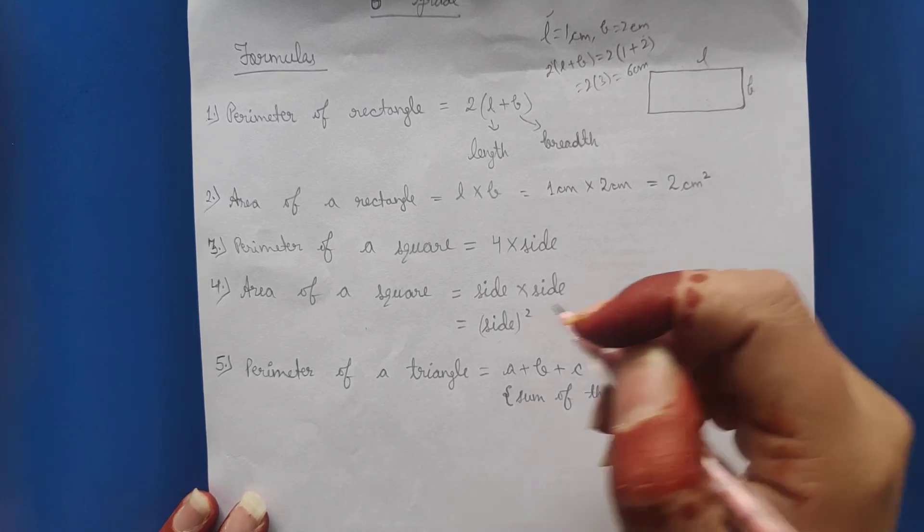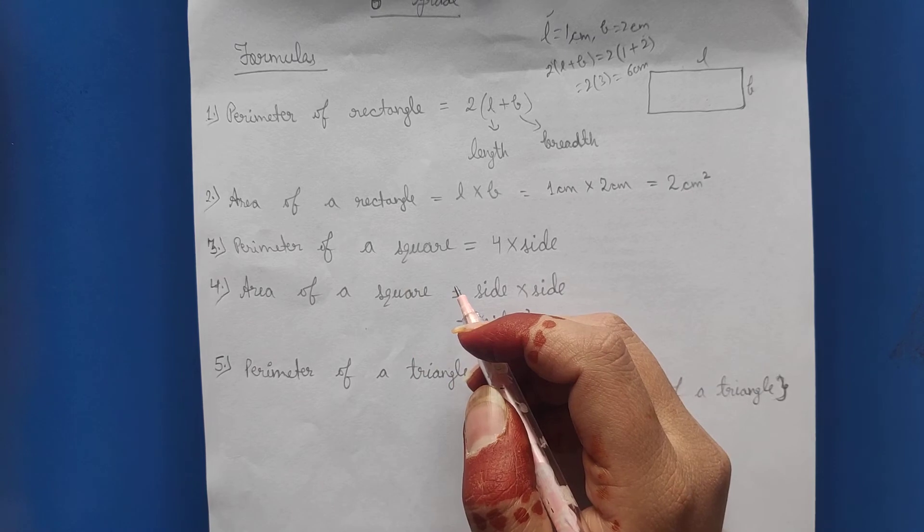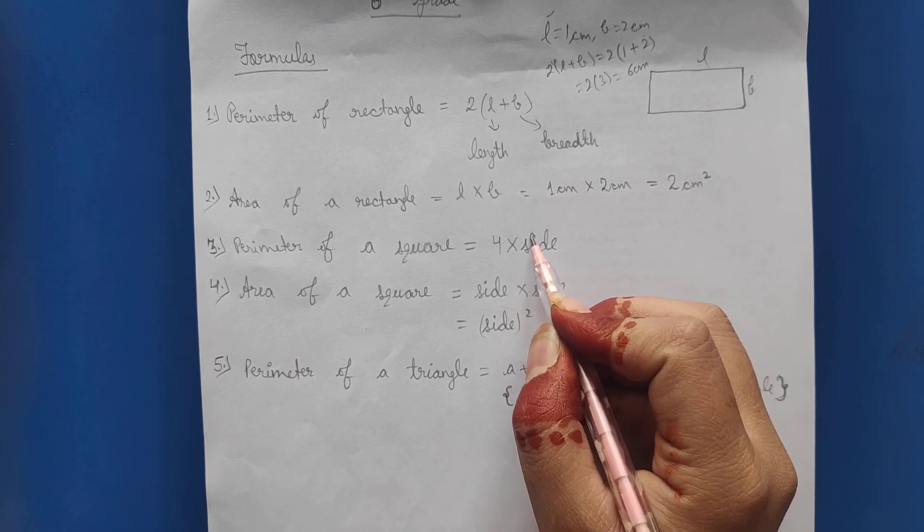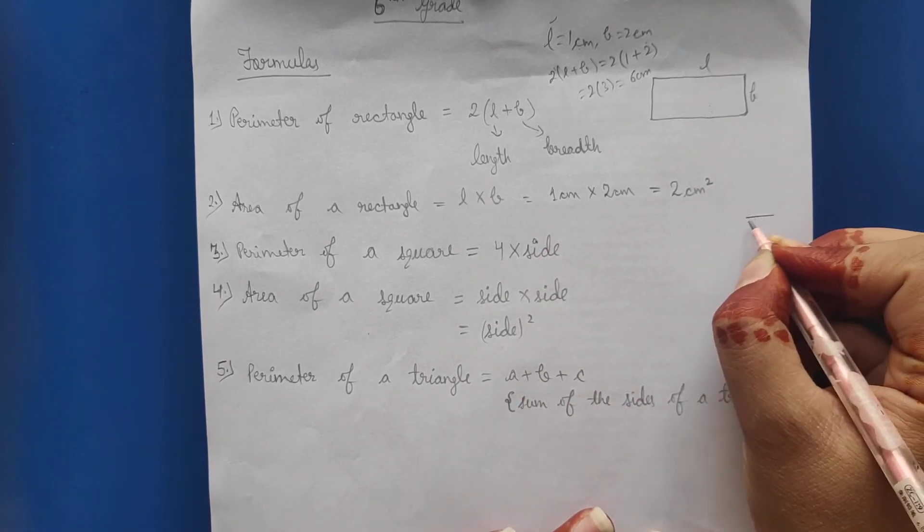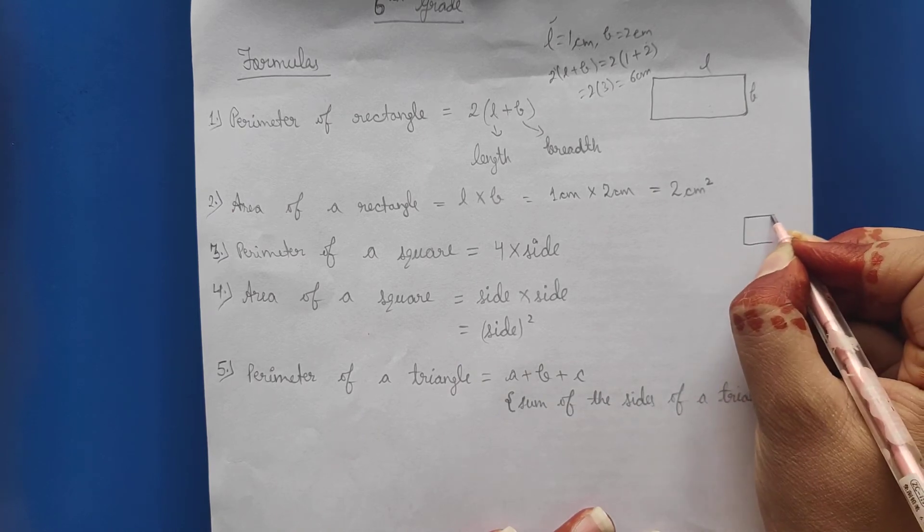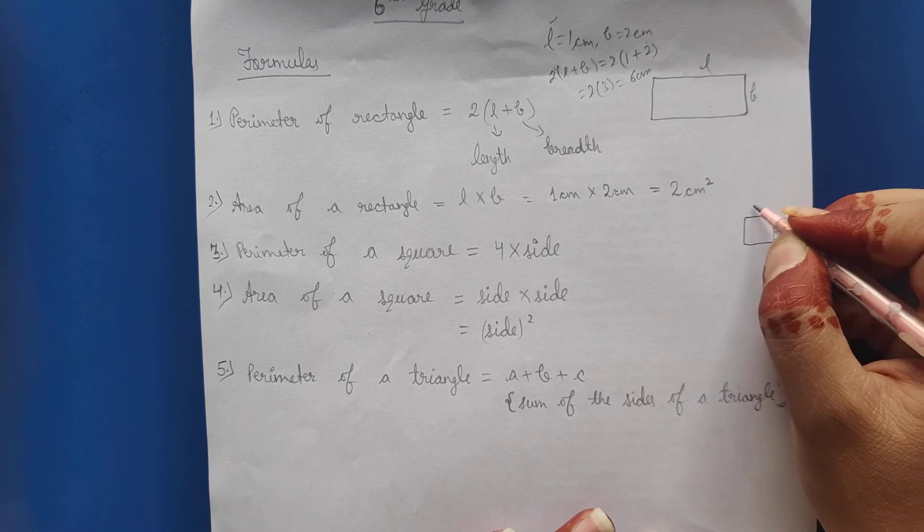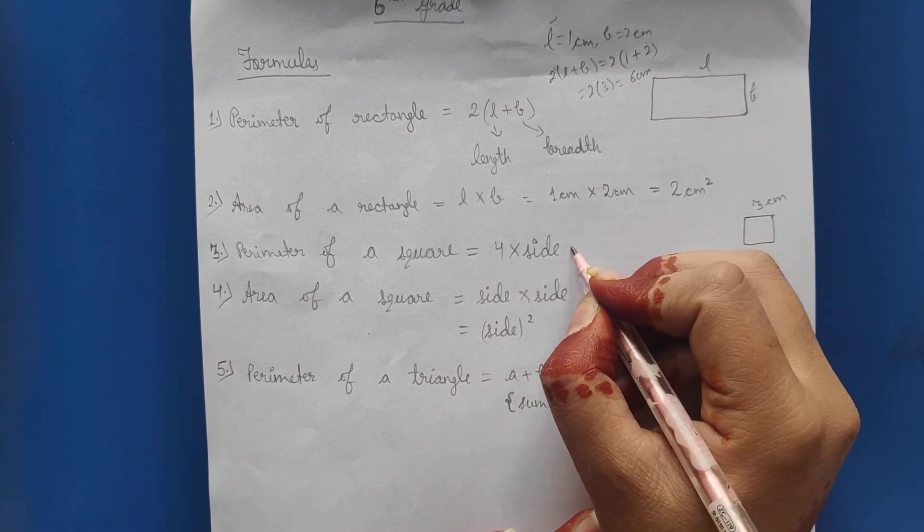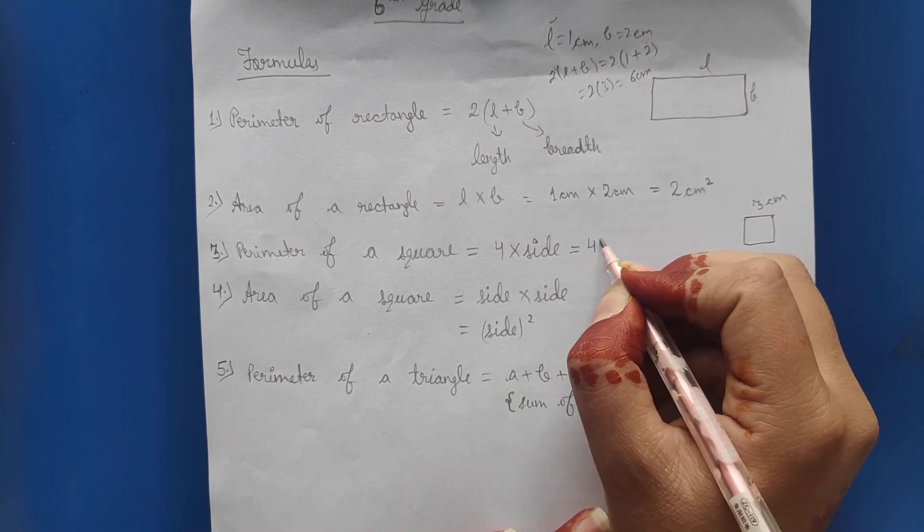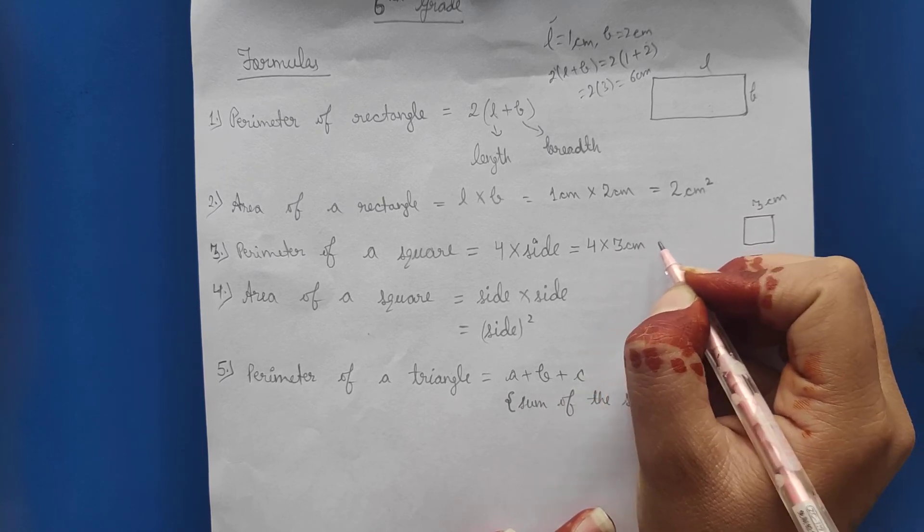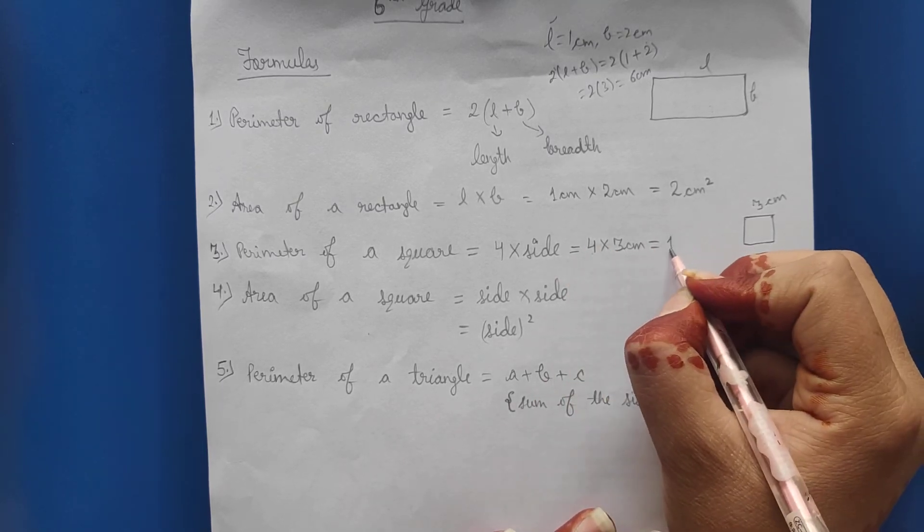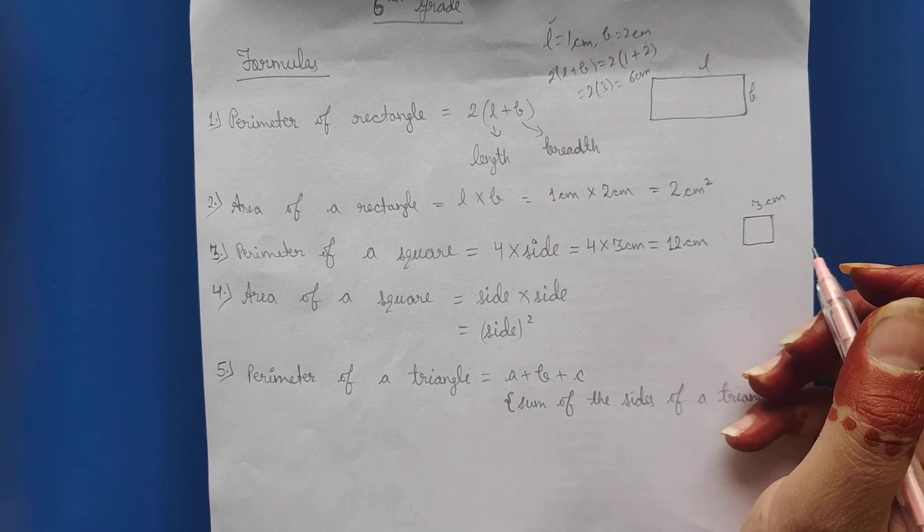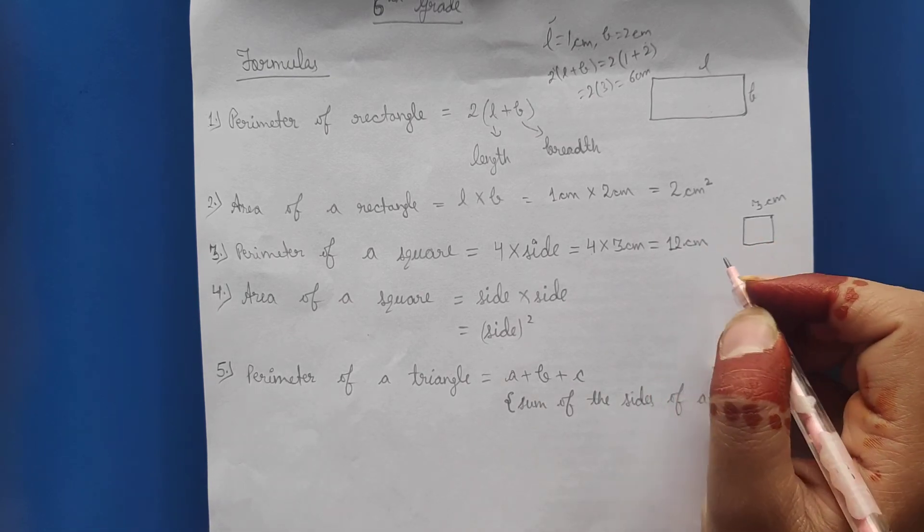Next step, perimeter of a square. What is the perimeter of a square? 4 multiply by side. Suppose the side is 3 centimeter. So perimeter of square with side 3 centimeter is 4 into 3 equals 12 centimeter.